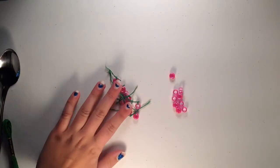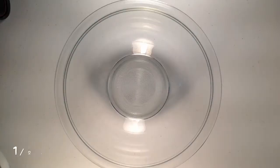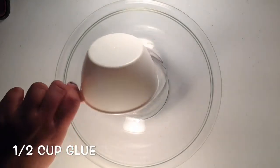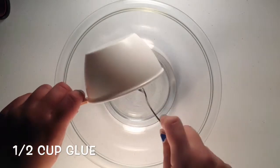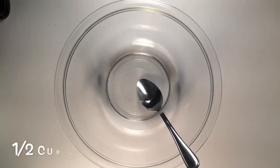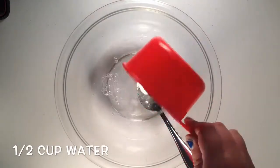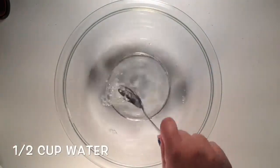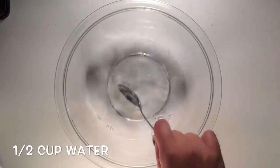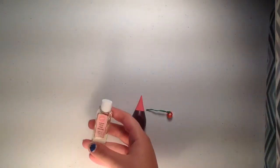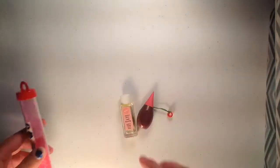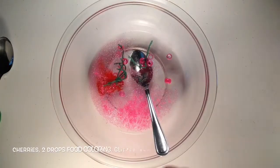So now that I've got all of the stems on my cherries, we can start making this slime. So you're going to take your half a cup of glue and a half a cup of water, and you're going to mix that together. Once you get that mixed, you can go ahead and add your cherries, two drops of food coloring, one drop of your cherry candy flavoring, and some glitter. Just go ahead and mix that.